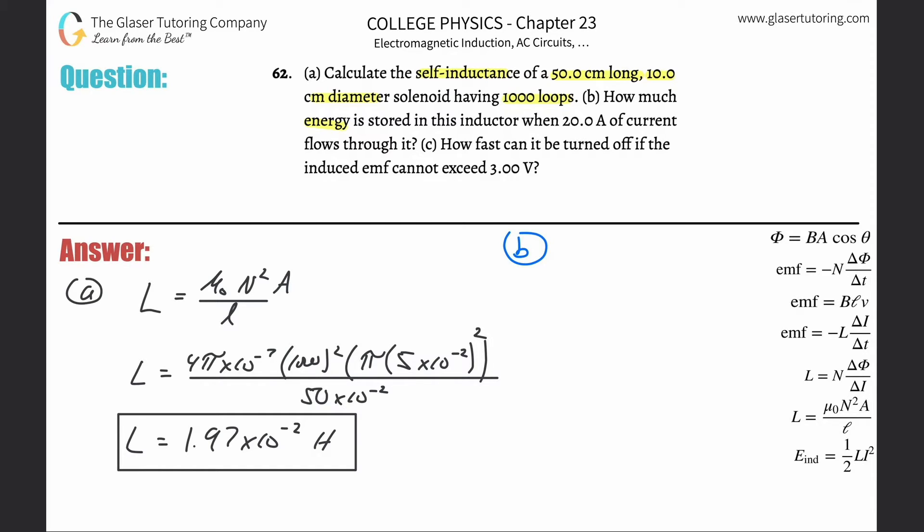How much energy is stored in this inductor when 20 amps of current flows through it? We have a formula for the energy of the inductor: it's going to be ½ times the inductance multiplied by the current flowing through it squared. This is simply going to be ½ times the inductance we just found, 1.97 times 10 to the minus 2, multiply it by the current squared. Take out the calculator: 0.5 times our answer from before times 20 squared.